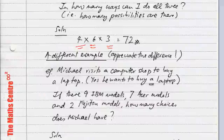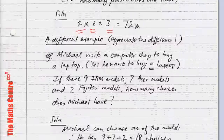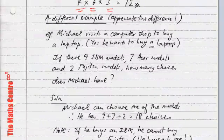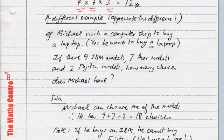How many choices does Michael have? So, let's look at the solution. Michael can choose only one. So, he can choose one of the models, and how many choices does he have? He has nine IBM models from which to choose from, seven Acer models, and two Fujitsu models, but he can only buy one. So, he has got 18 choices.